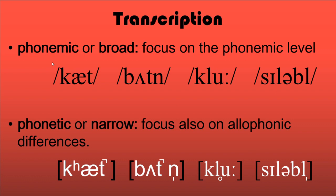Before we close, let's look at two types of transcription: broad transcription and narrow transcription. Broad transcription uses only phonemic symbols — the symbols for phonemes — and is called phonemic transcription. Narrow transcription, also called phonetic transcription, uses allophonic symbols. For example, 'cat' in narrow transcription includes a K with an unreleased symbol, and 'button' uses an unreleased T.